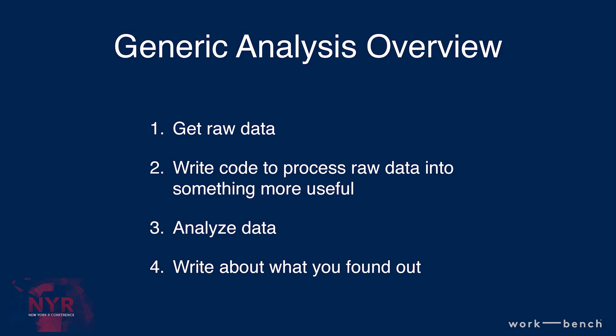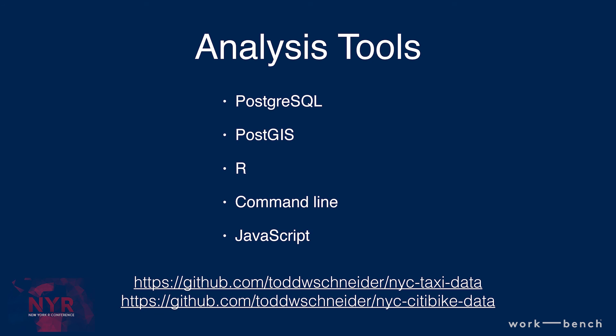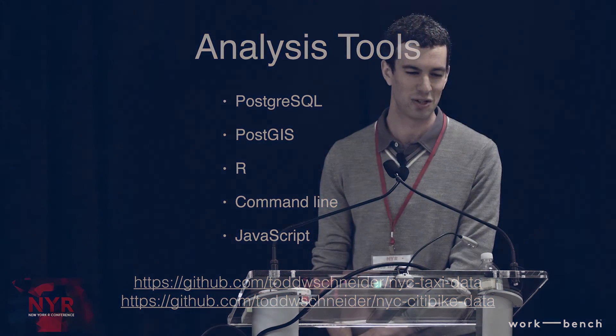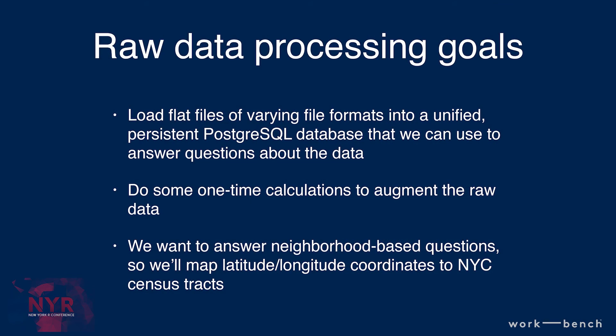City bike also provides a little bit of demographic data, like the age of riders and their gender. The tools used in these projects: PostgreSQL as a SQL database, PostGIS as a geographic information system, R, and command line tools, which come in handy especially for pre-processing and text processing to fix data problems. JavaScript handles the nice web interactivity. All the code is in GitHub repositories, which I'd encourage you to check out.